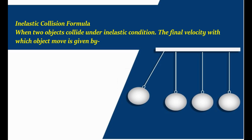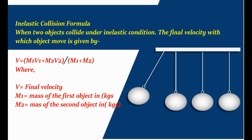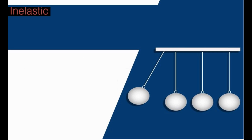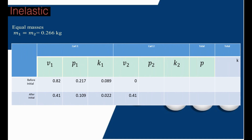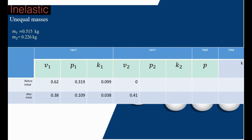The inelastic collision formula: when two objects collide under inelastic conditions, the final velocity with which the combined object moves is given by this equation. Now fill in the table. For inelastic collisions with equal masses: M1 equals 0.515 kg, M2 equals 0.225 kg. Fill in the blanks for this case.